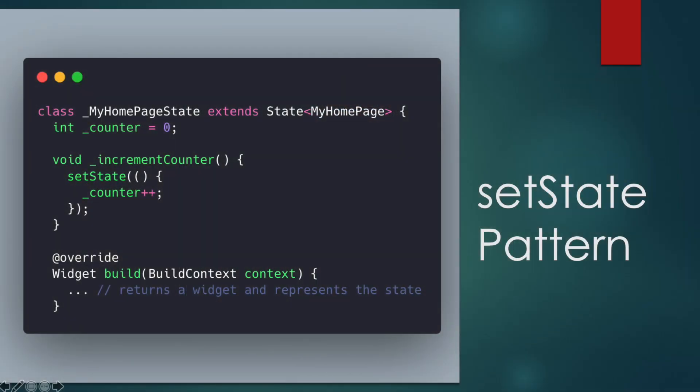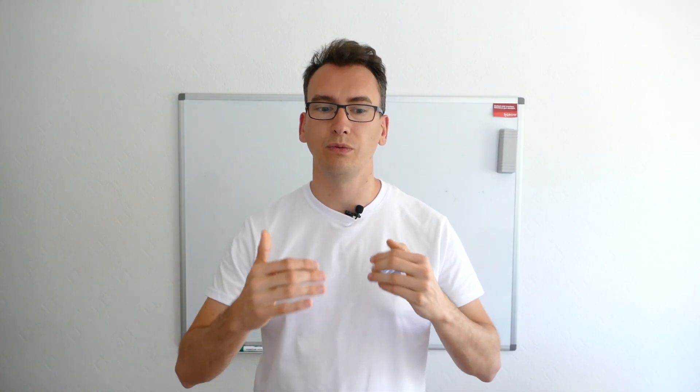And how is it called? It is the setState pattern. Most of you will know it already — we have stateful and stateless widgets. In a stateful widget, we have state that we track and the state can be mutable, so it can change over time. Then we have to call setState, which re-triggers the build function, and with that we show the updated UI. With the re-trigger of the build function with the new state, we create the UI that reflects the current state.